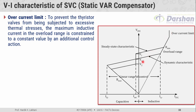These are the various portions of the VI characteristic of SVC. We started from V_reference, then understood V1 as V_reference_maximum and V2 as V_reference_minimum, followed by the linear range of control, then the slope or current droop, after that the overload range, and finally the overcurrent limit.